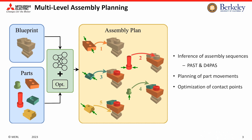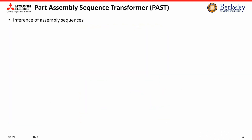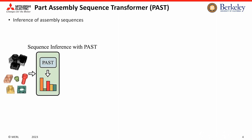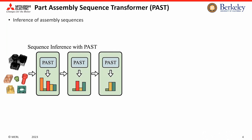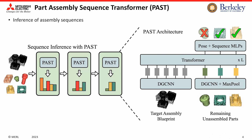The assembly sequence is inferred using a part assembly sequence transformer, PAST, trained with a dataset for part assembly sequences, D4PASS. PAST operates sequentially to estimate the assembly probability for each remaining part, and the part with the highest probability is chosen for assembly. Using the third block as an example, PAST selects one part from the three remaining options. To represent blueprints and parts, we employ point clouds processed through dynamic graph CNNs and transformers. PAST also handles pose regression as a secondary task.